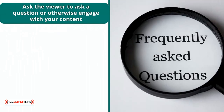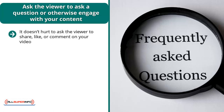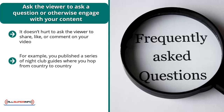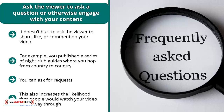Ask the viewer to ask a question or otherwise engage with your content. It doesn't hurt to ask the viewer to share, like, or comment on your video. One of the easiest ways to do this is to ask the viewer a question. For example, if you publish a series of nightclub guides hopping from country to country, at the end of your latest video you can ask: 'Which nightclub, which city, and which country would you want me to go to next?' When people engage with your content, YouTube tends to rank your video higher because engagement indicates that people are paying attention. This also increases the likelihood that people watch your video all the way through — viewing duration also plays a big role in how well your video ranks.